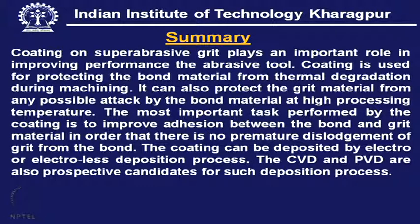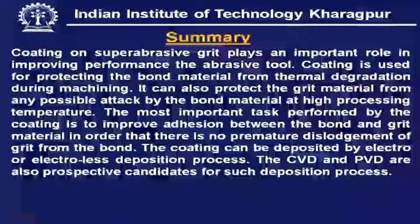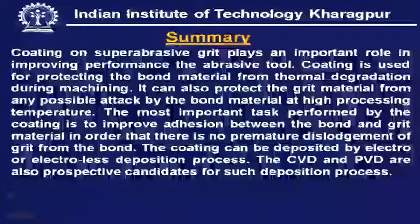Summary: Coating on super abrasive grit plays an important role in improving performance of the abrasive tool. Coating is used for protecting the bond material from thermal degradation during machining. It can also protect the grit material from any possible attack by the bond material at high processing temperature. Most importantly, the coating improves adhesion between the bond and the grit material so that there is no premature dislodgement of the grit from the bond. The coating can be deposited by electro or electroless deposition processes; CVD and PVD are also prospective candidates for such deposition.